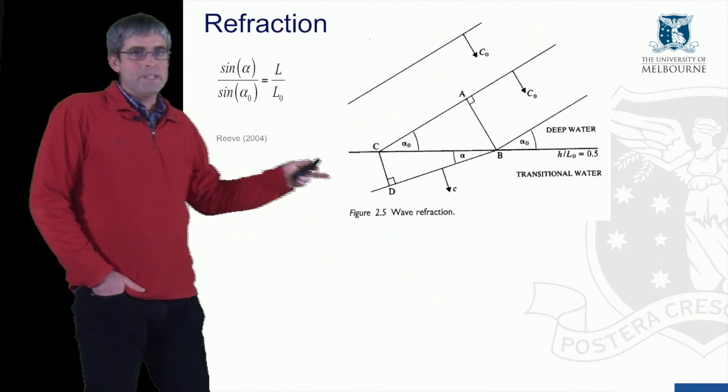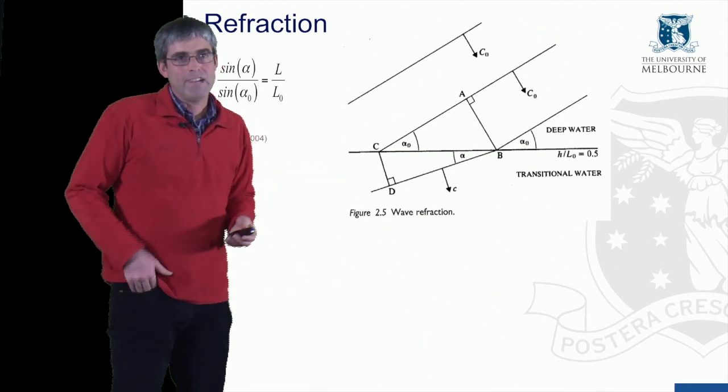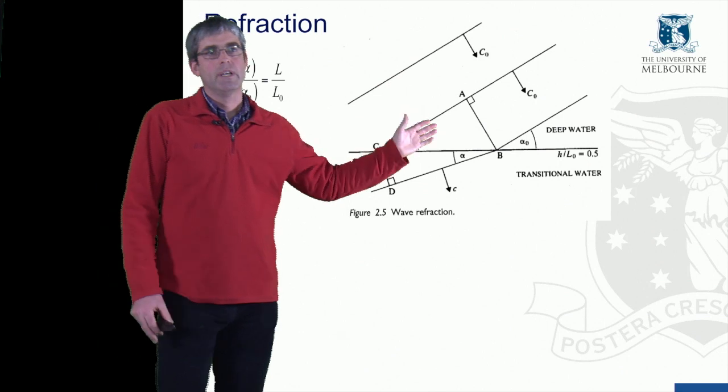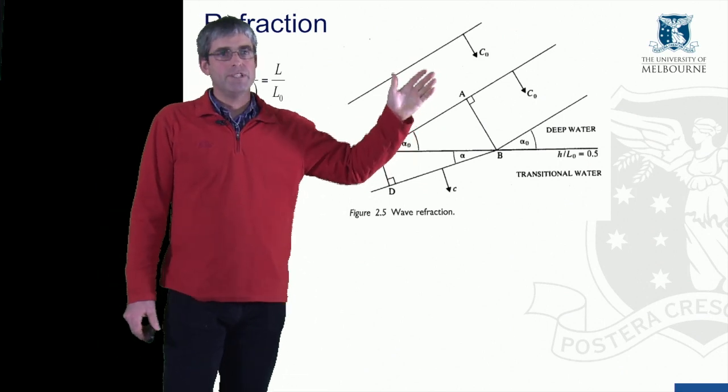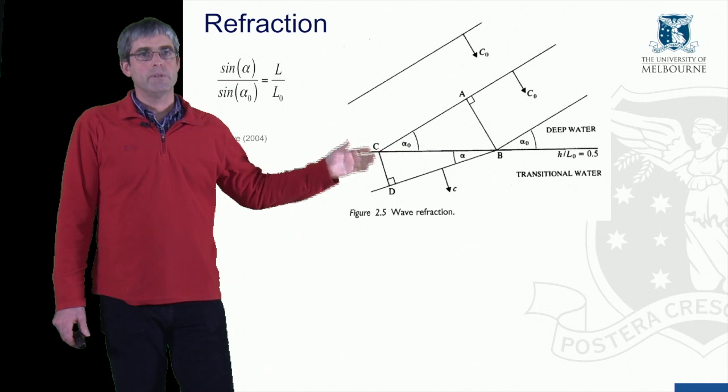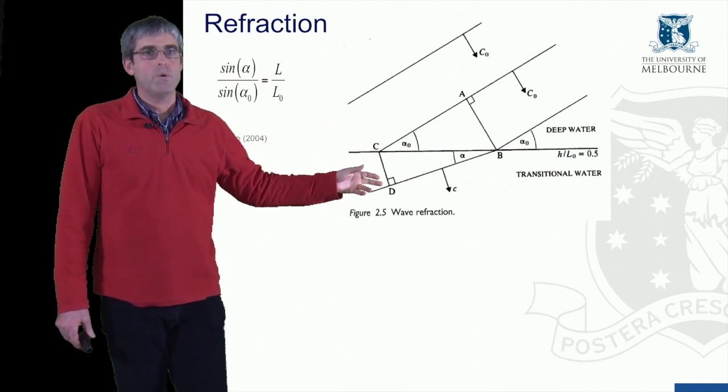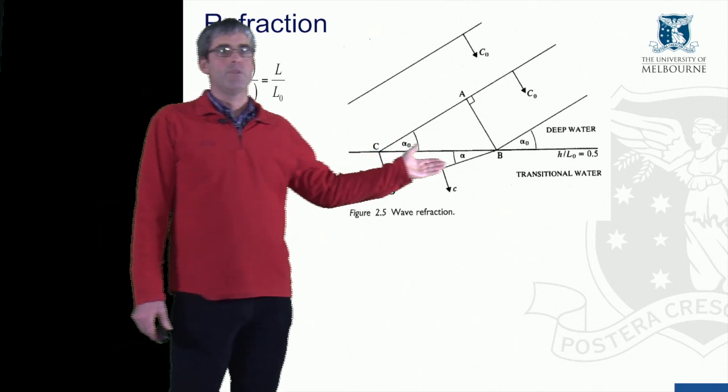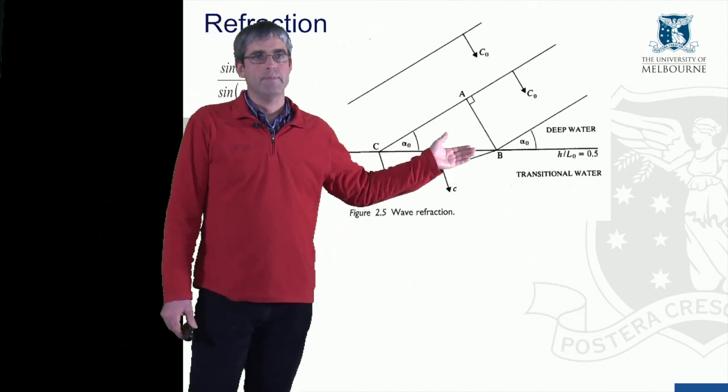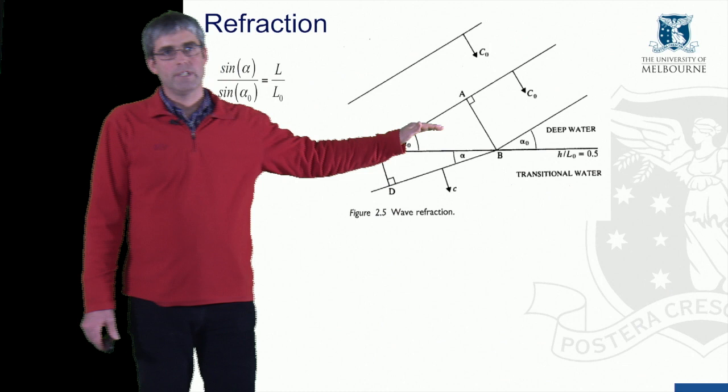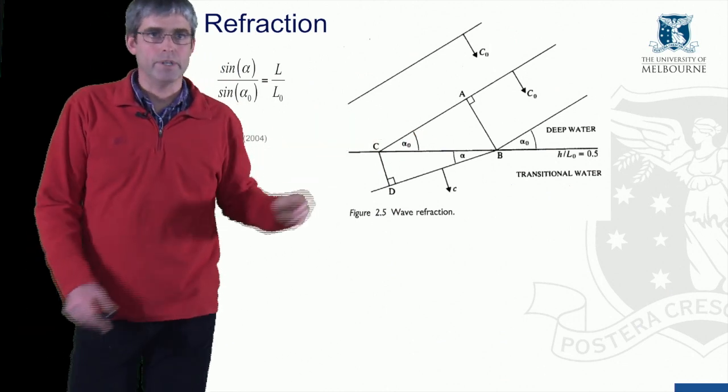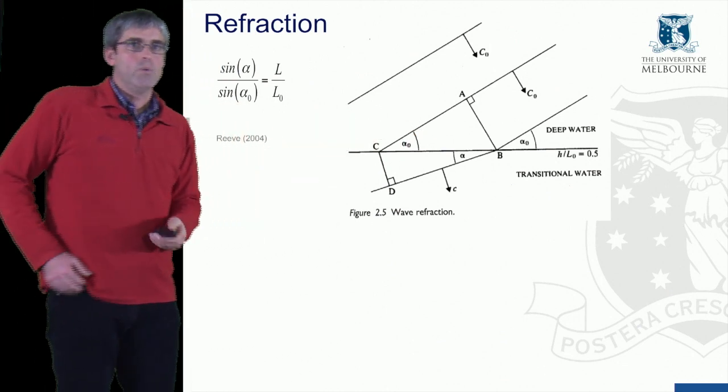This diagram demonstrates what's happening with the refraction. We have waves approaching a transition from deep water to shallow water at an oblique angle. As waves pass into the shallow water, they slow. And so we get a shift in the angle of the wave, the incident angle of the wave relative to this interface between the deep and the shallow water. That's called wave refraction.